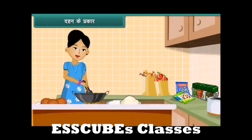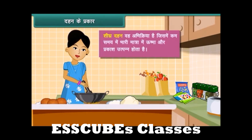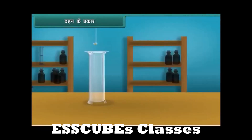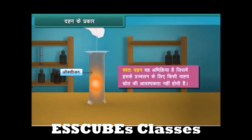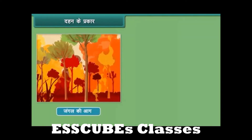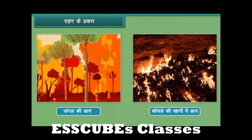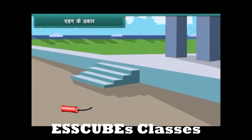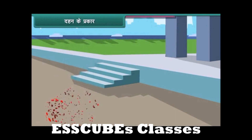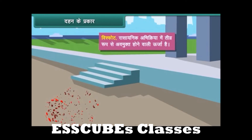दहन के प्रकार: LPG शीघ्र जलने लगती है और भारी मात्रा में उष्मा देती है — इस प्रकार का दहन द्रुत दहन कहलाता है। जब सफेद फास्फोरस को कुछ समय के लिए खुली वायु में रखा जाता है तो वह आग पकड़ लेता है — इस प्रकार का दहन स्वतः दहन कहलाता है। जंगलों में लगने वाली आग और कोयले की खानों में लगने वाली आग स्वतः दहन के उदाहरण हैं। पटाखे के जलने पर भारी मात्रा में उष्मा, प्रकाश और ध्वनि उत्पन्न होती है — इस प्रकार का दहन विस्फोट कहलाता है।